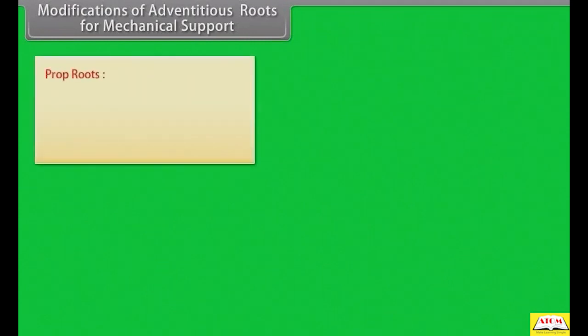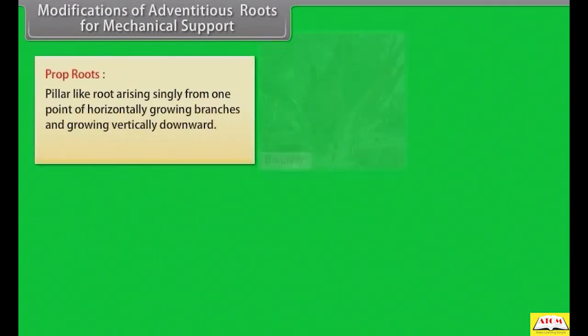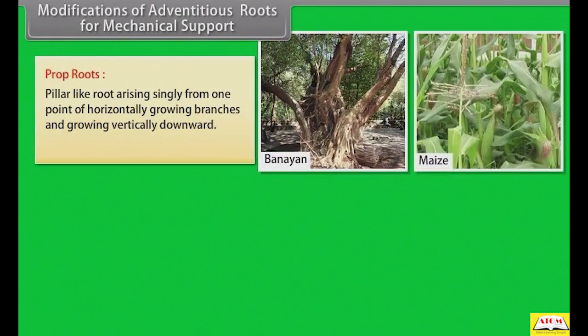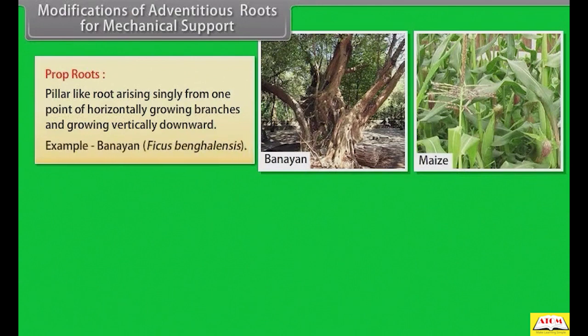Modifications of adventitious roots for mechanical support include prop roots: pillar-like roots arising singly from one point of horizontally growing branches and growing vertically downward. Example: banyan.